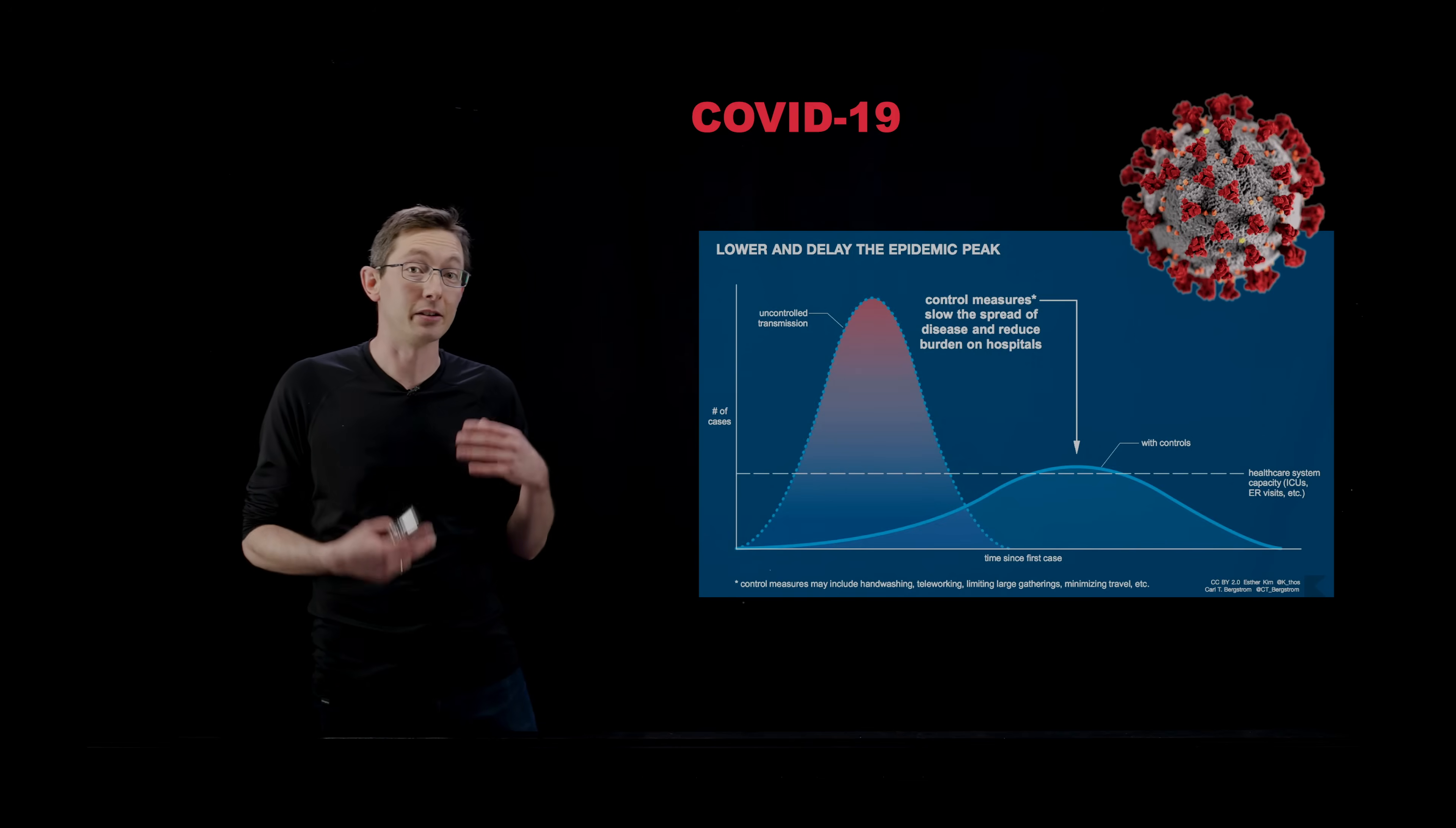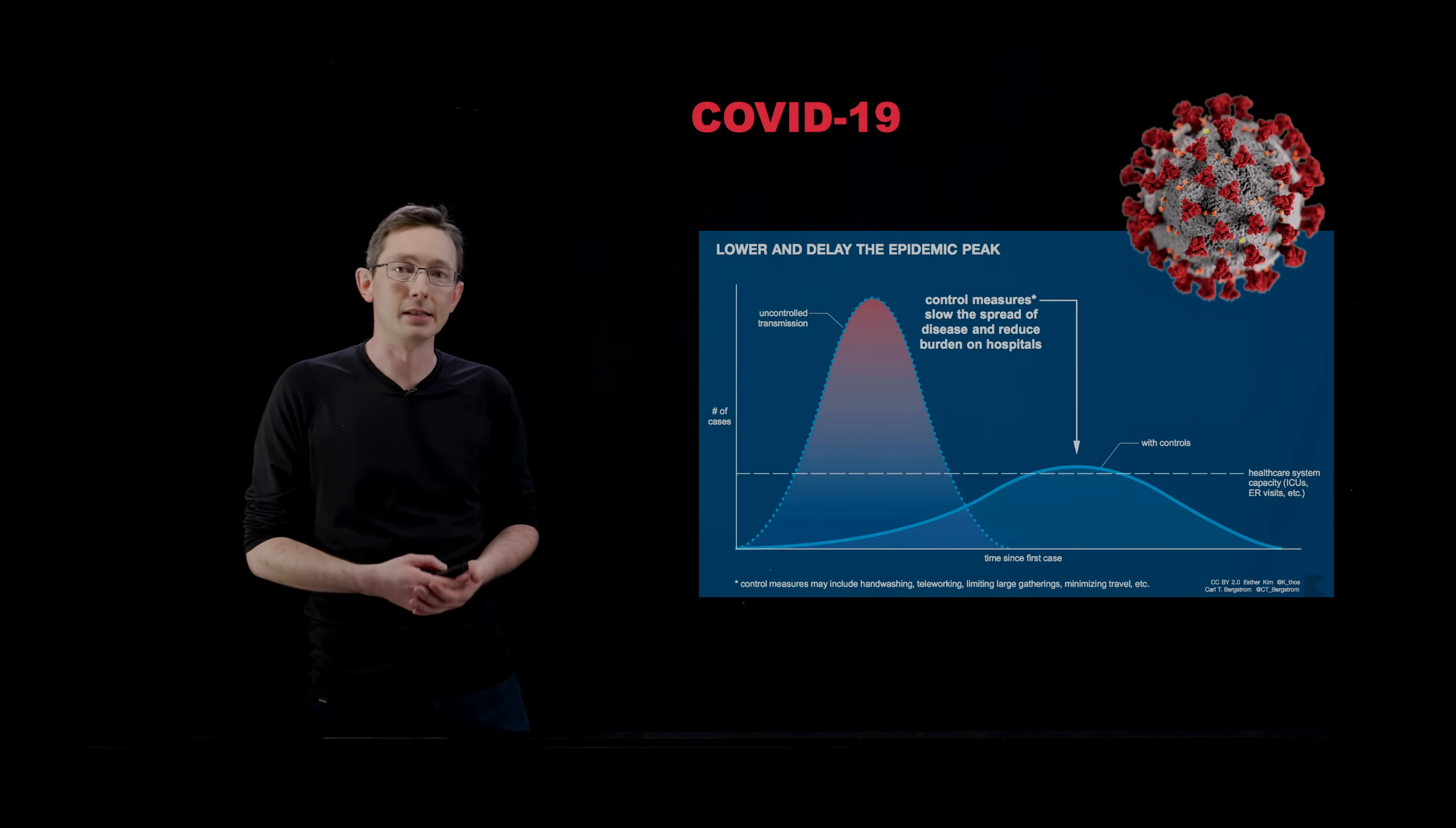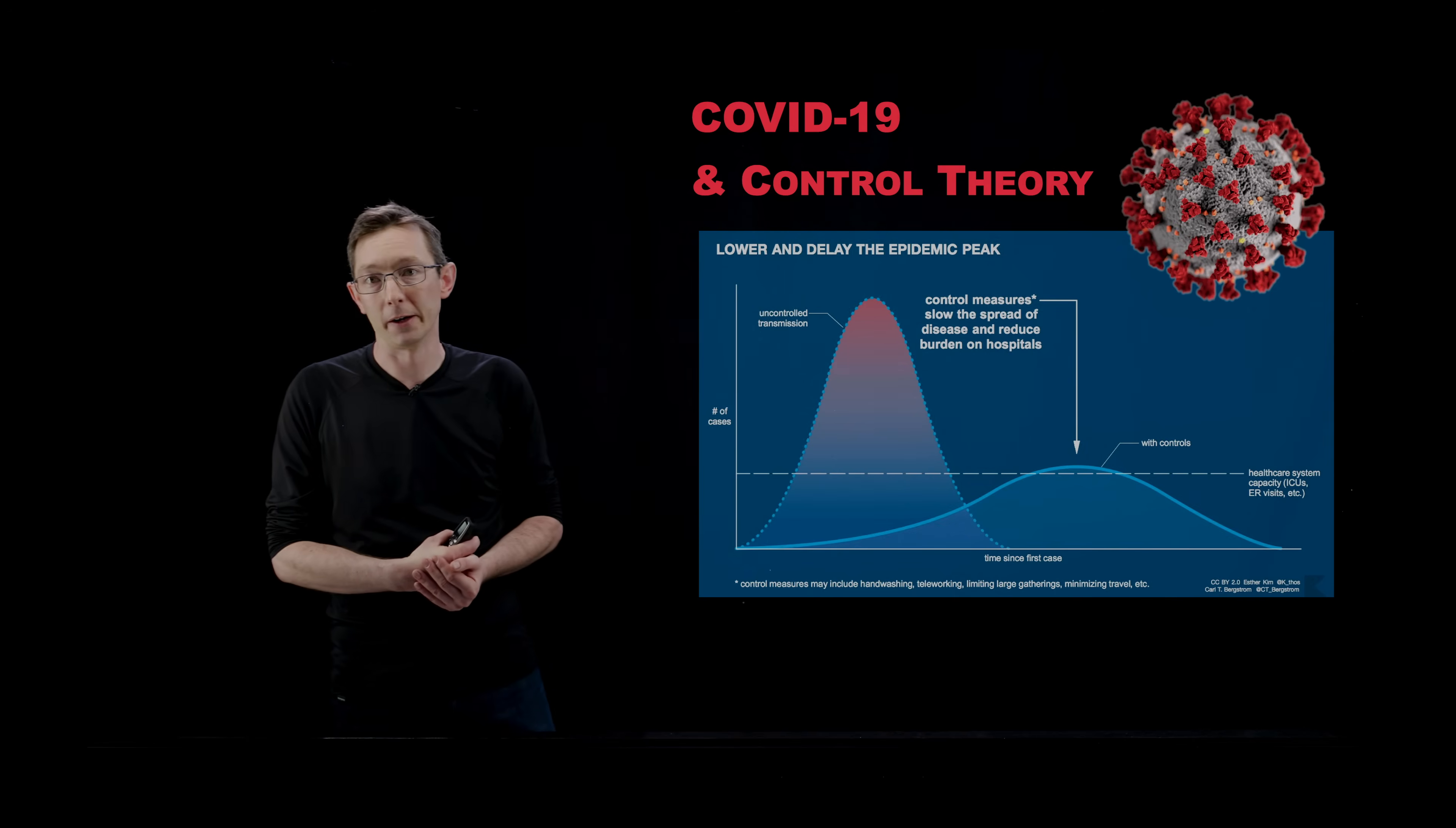All of my degrees are in mathematics and engineering. But the more that I think about this, this is a curve we've all seen. This is the flatten the curve picture. And the more that I think about it, this whole idea of flattening the curve is really a control problem. So what I really want to do is think about COVID-19 and flattening the curve specifically as a control problem or from the lens of control theory.